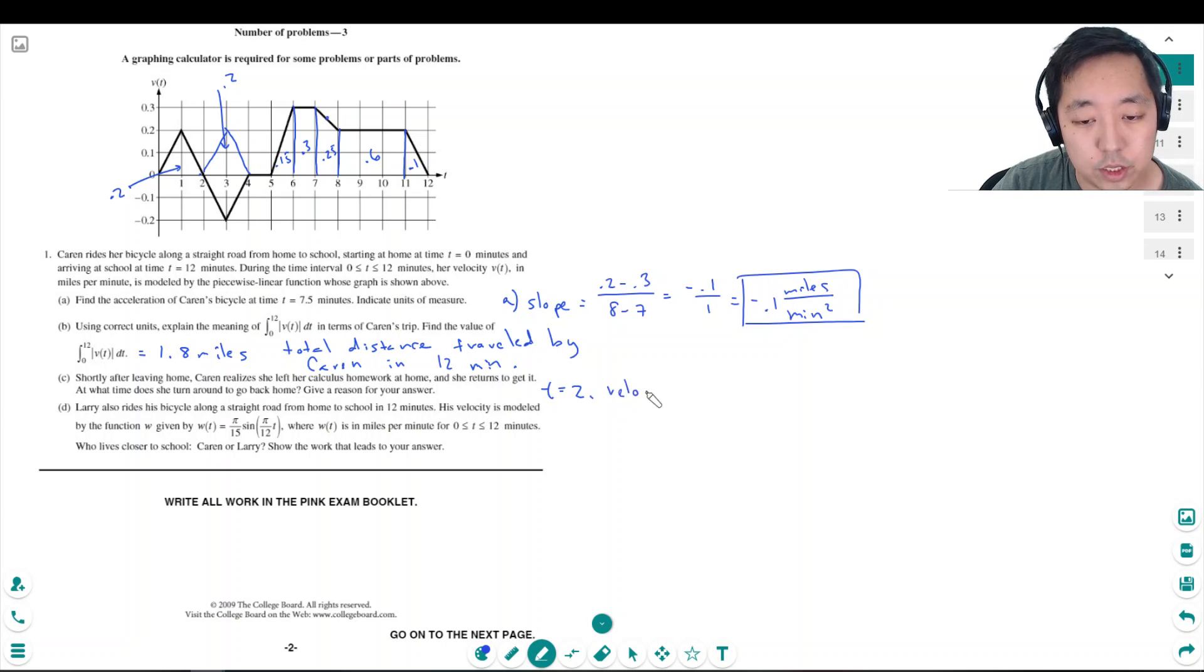The velocity changes. Larry also rides his bicycle along a straight road from home to school in 12 minutes. His velocity is modeled by the function this, where wt is in miles per minute. Who lives closer to school, Karen or Larry?